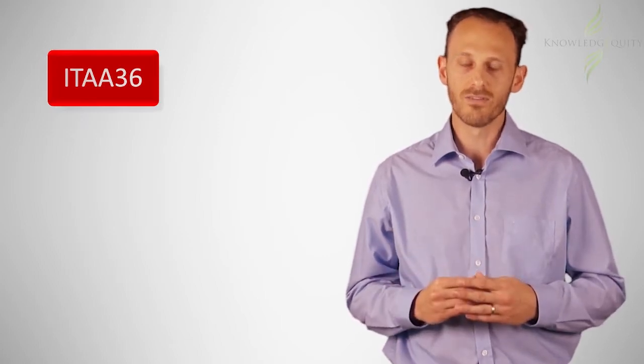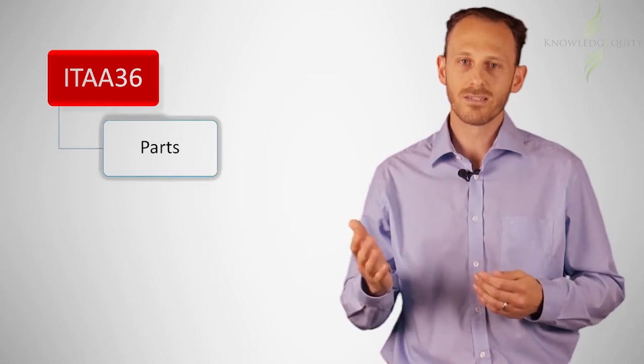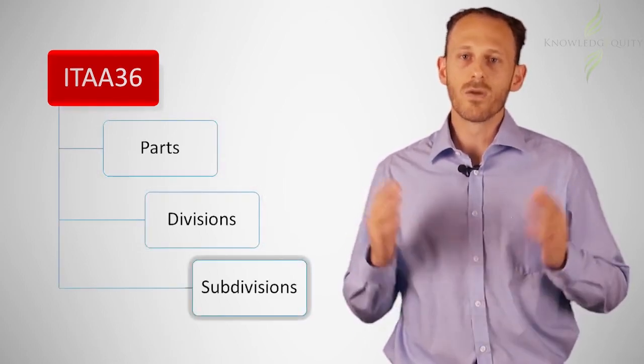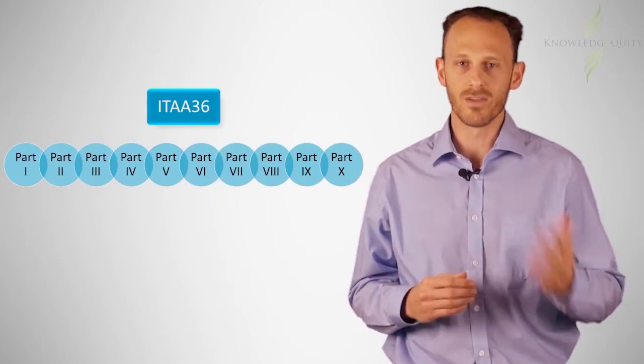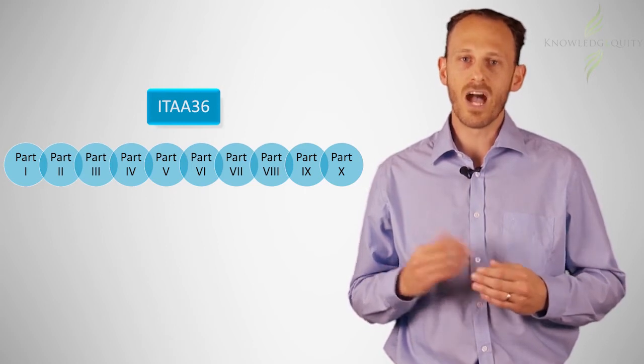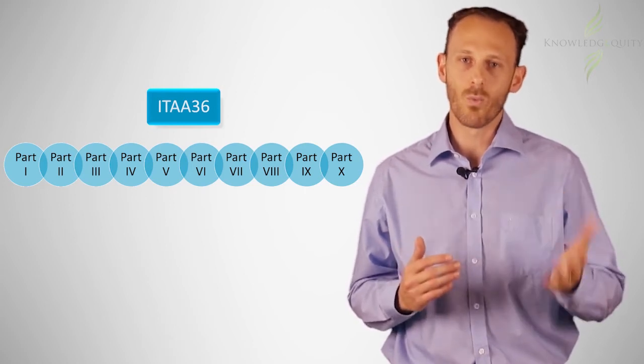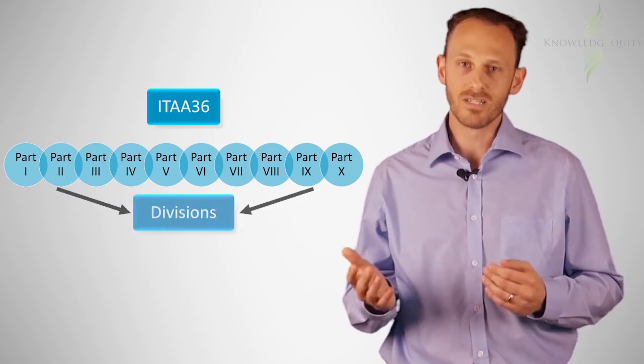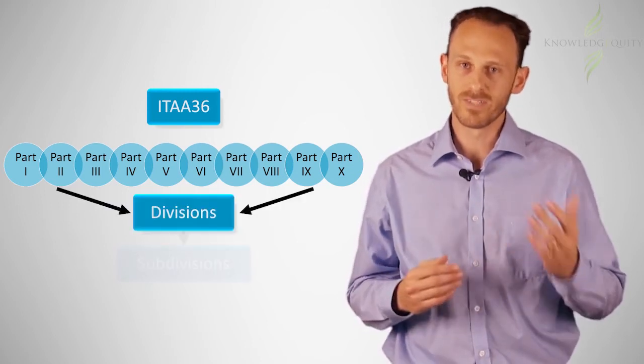For the ITAA 36, the structure is slightly different, and has the following hierarchy: parts, divisions, subdivisions. There are 10 parts in the ITAA 36, all in Roman numerals, meaning that the ITAA 36 has parts I to part X. Some parts have divisions, and some divisions have subdivisions.